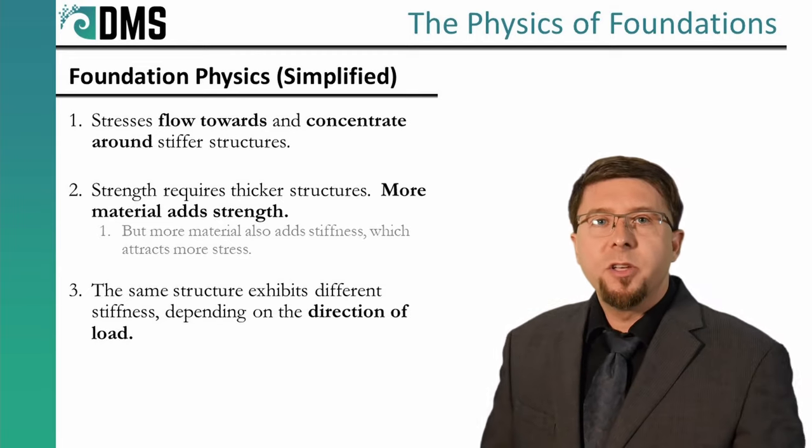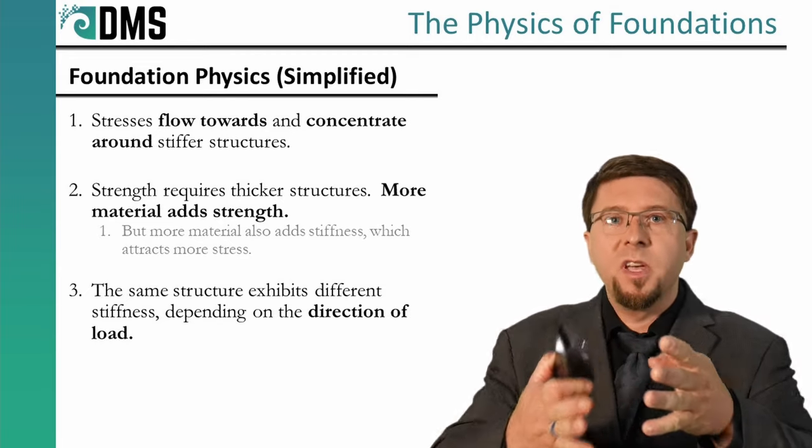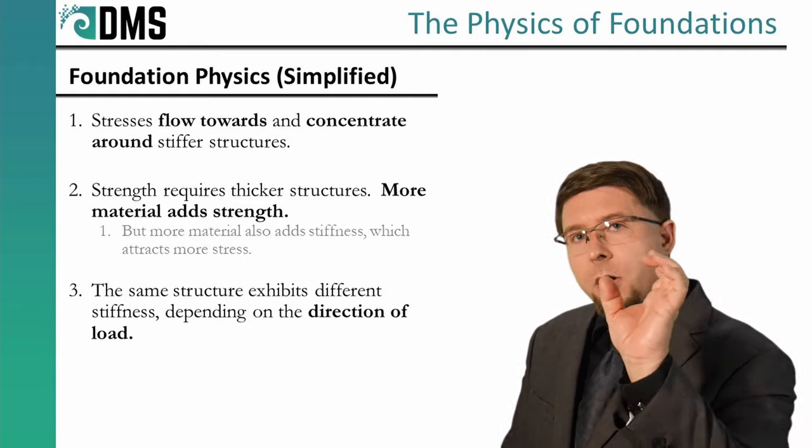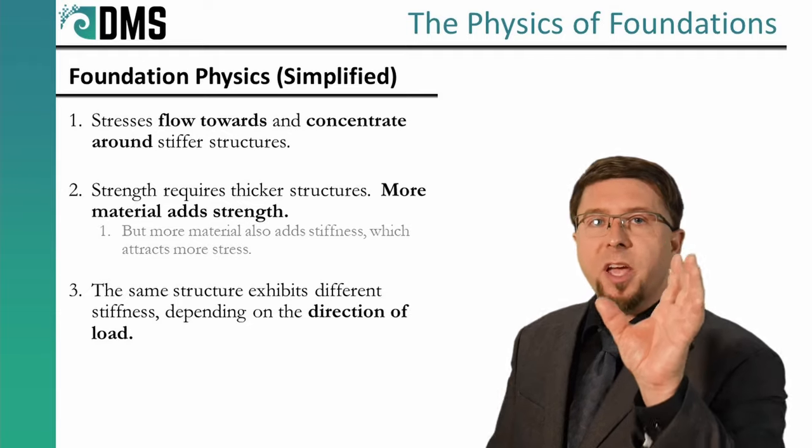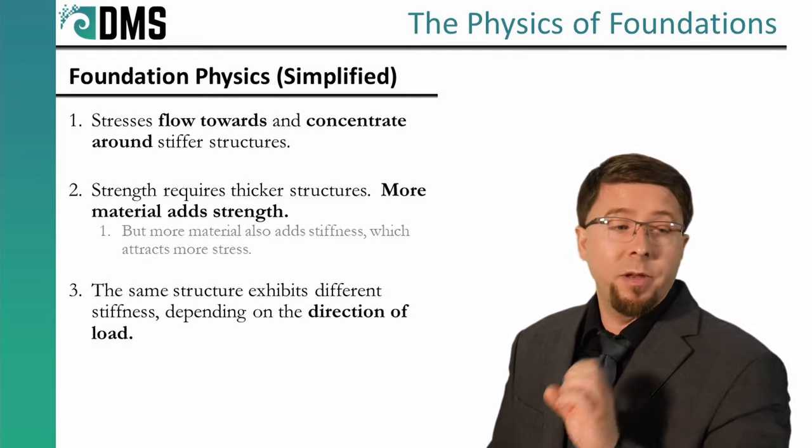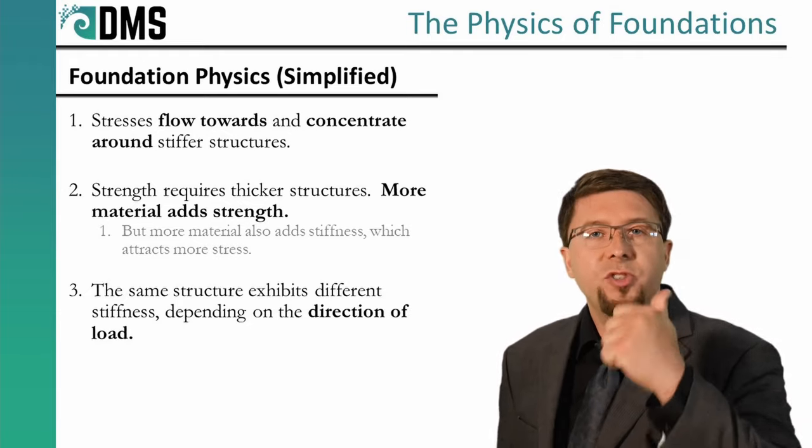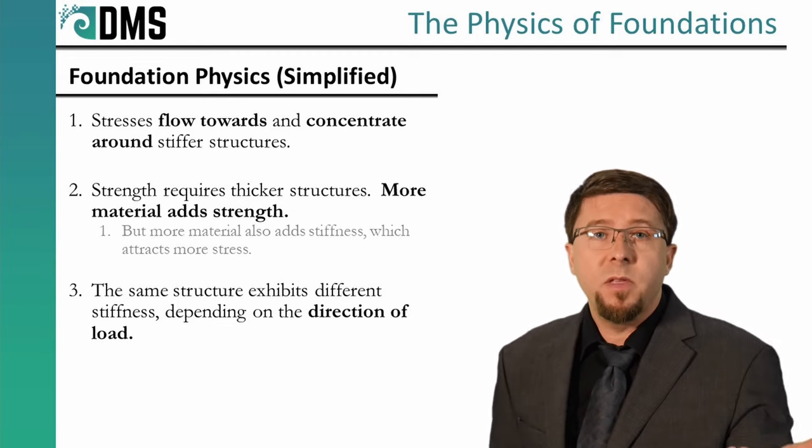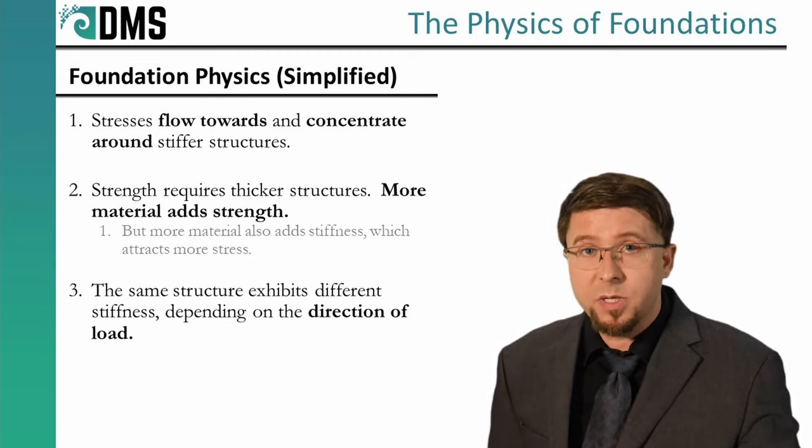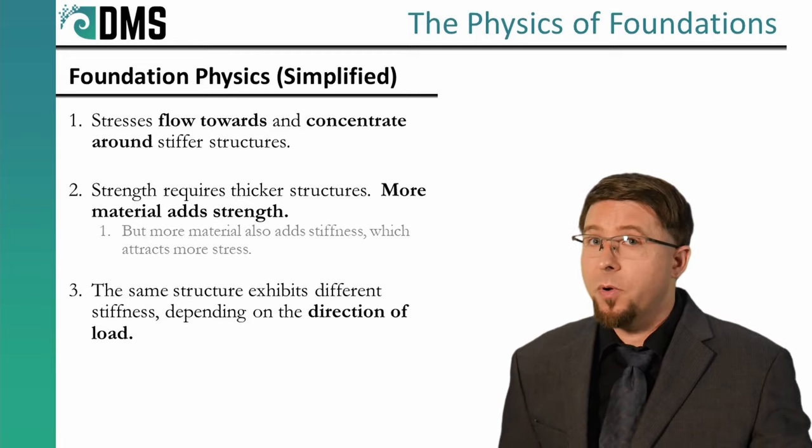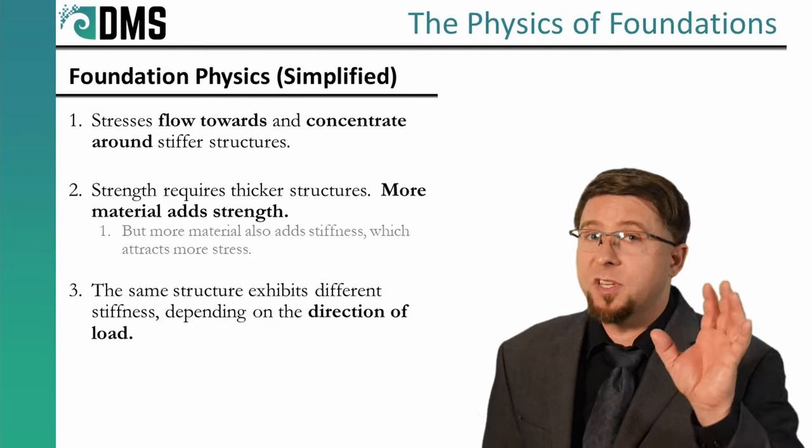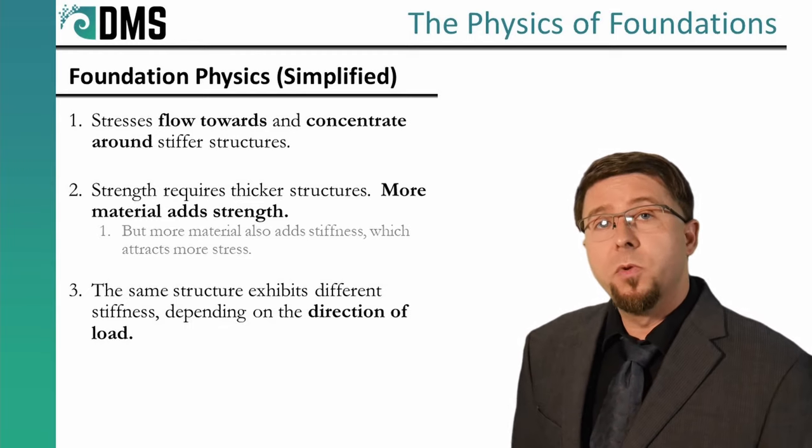Rule number one: stresses will flow towards and concentrate around stiffer, strong structures. If you build a large, strong I-beam, it's going to actually attract more stress to it. Rule number two: strength requires thicker structures. More material means more strength, lower stresses. But remember rule number one, more material means more stiffness and more stress attracted to it. And then rule number three: the same structure will exhibit different stiffness depending on the direction that loads are applied.